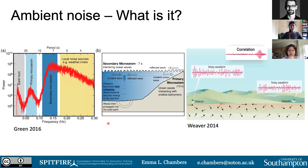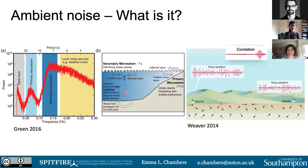We want to use these for ambient noise tomography. Ambient noise is the background vibrations of the Earth, generated by the rotation of the Earth, the interaction of ocean waves, or local noise sources such as weather, rivers, and truck noise. I'm interested in the primary and secondary microseisms, generated from ocean waves. The primary microseism is about half the power of the secondary: it involves an ocean wave interacting with shallow bathymetry at coastlines, sending out a seismic wave recorded on a detector. The secondary microseism is twice the power, from the interaction of two ocean waves sending acoustic energy to the seafloor, then propagating out and recorded on detectors.